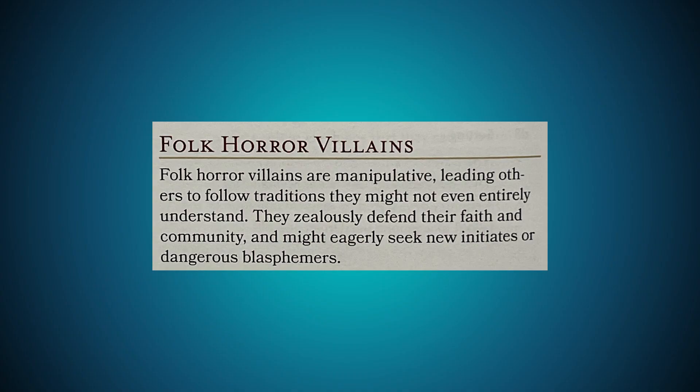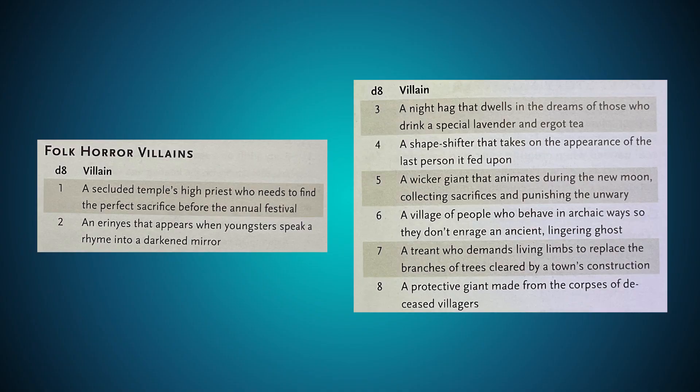Folk horror villains are manipulative, leading others to follow traditions they might not even entirely understand. They zealously defend their faith and community and might eagerly seek new initiates or dangerous blasphemers. The folk horror villains list is a D8: a secluded temple's high priest who needs to find the perfect sacrifice before the annual festival; an erroneous that appears when youngsters speak a rhyme into a darkened mirror; a night hag that dwells in the dreams of those who drink a special lavender and ergo tea; a shapeshifter that takes on the appearance of the last person it fed upon.